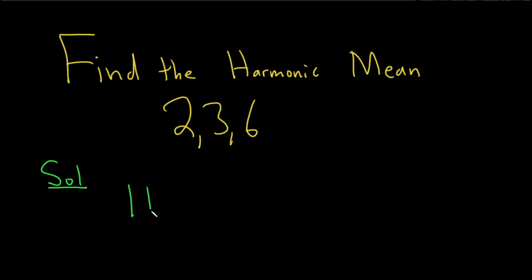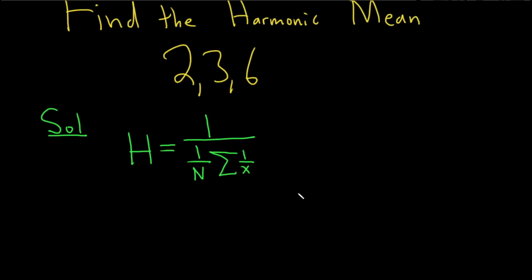So the harmonic mean, which we'll denote by H, is given by the following formula. It's 1 over 1 over n times the sum of the reciprocals of the numbers. This can be rewritten using some algebra as n over the sum of the reciprocals of your numbers. Because you have 1 over 1 over n, and so basically when you divide by 1 over n, you multiply by n over 1. So that's how you get the n upstairs.